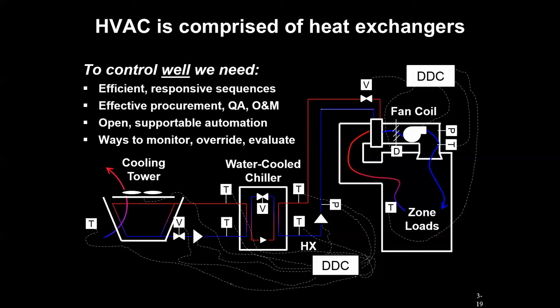That's the bare minimum for HVAC control systems. To do it well, we want to have the best sequence of operations, tight control loops. We want a good procurement process that gets us HVAC control systems that are QA'd well and can be managed by our O&M staff. We want open, supportable controllers that can talk to one another and be replaced easily. And we want an interface with the system so we can monitor, override, and evaluate the performance.